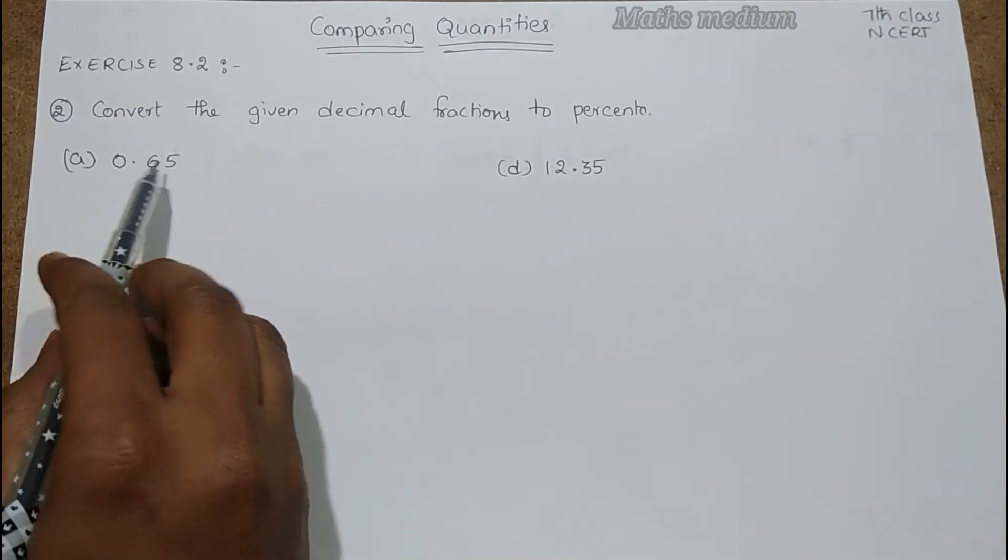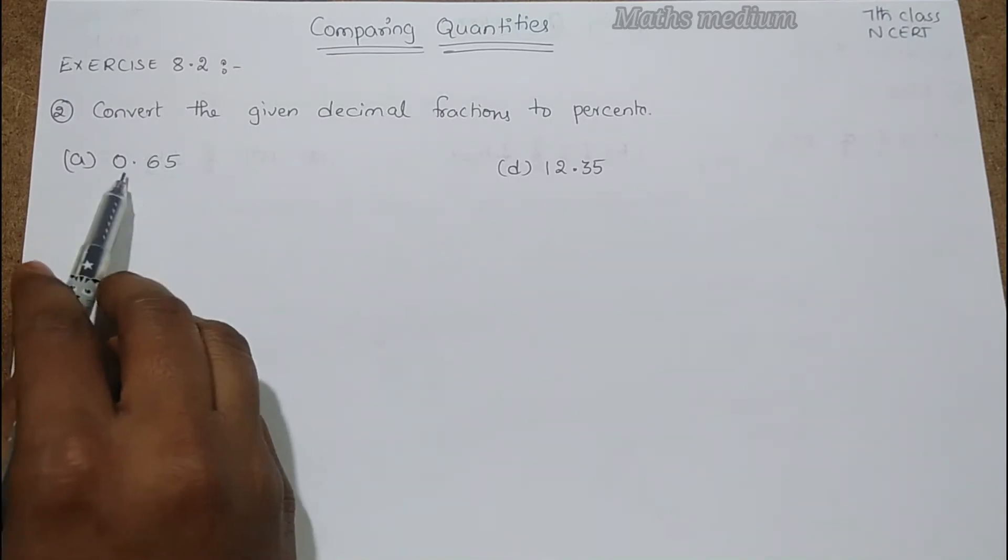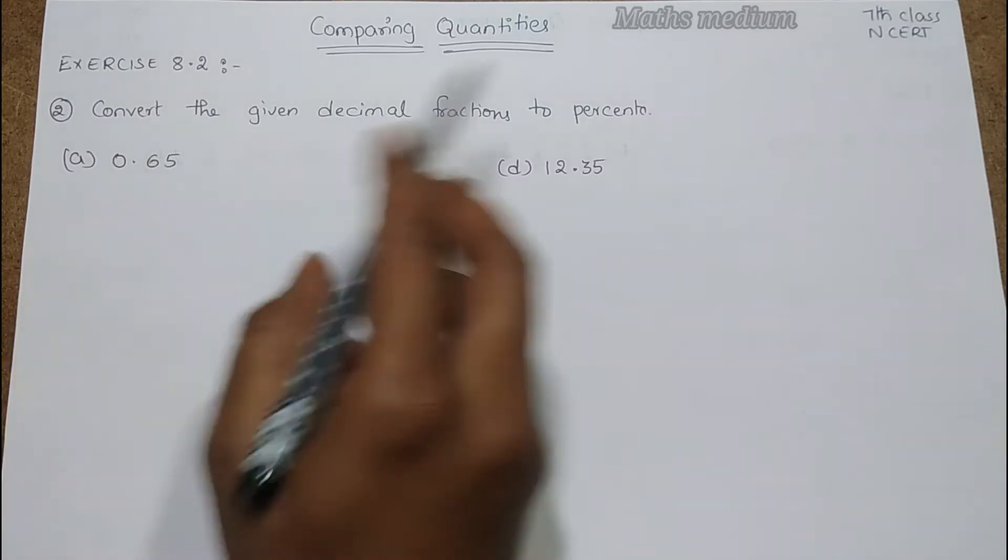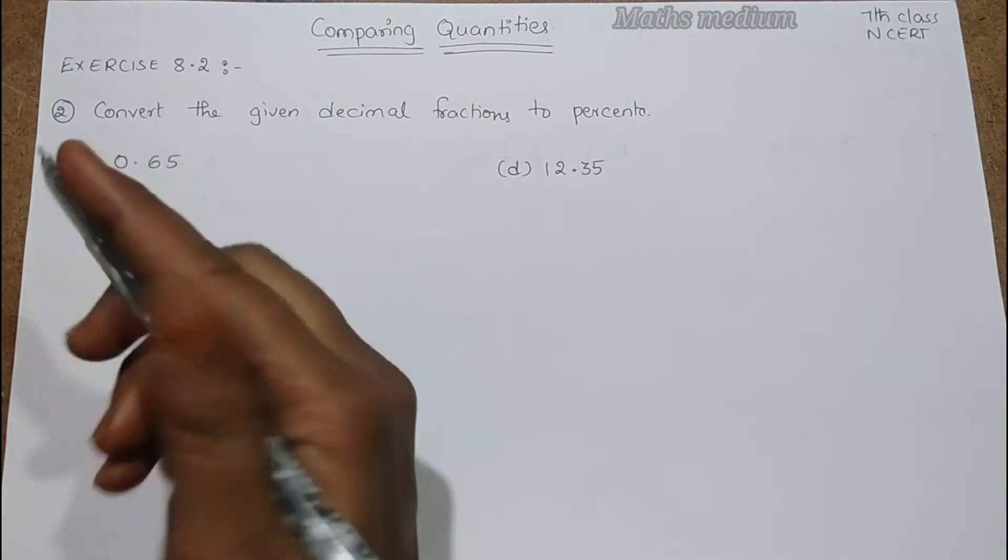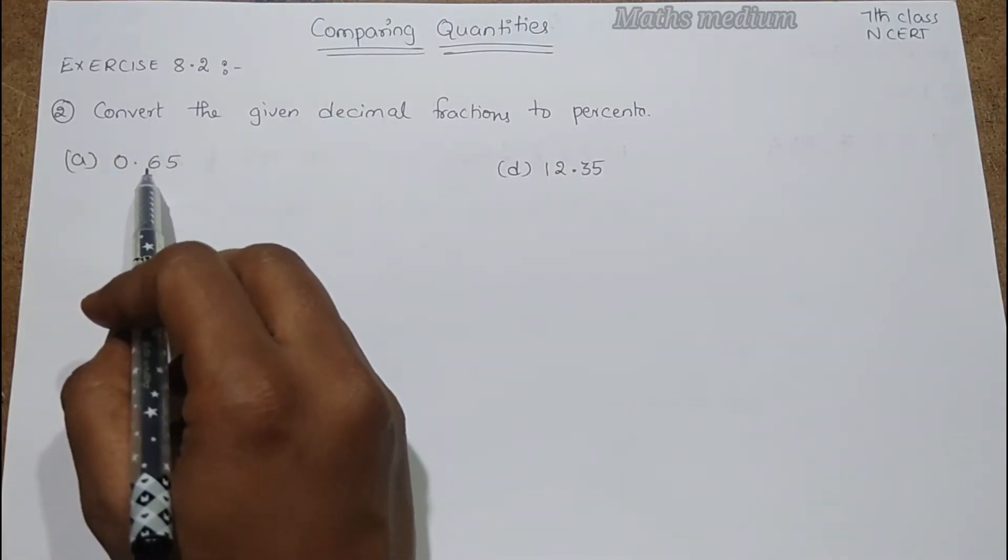And here 0.65. This is a decimal number. In order to make percentage we have to take two steps. One is making fraction and another one is simplification.